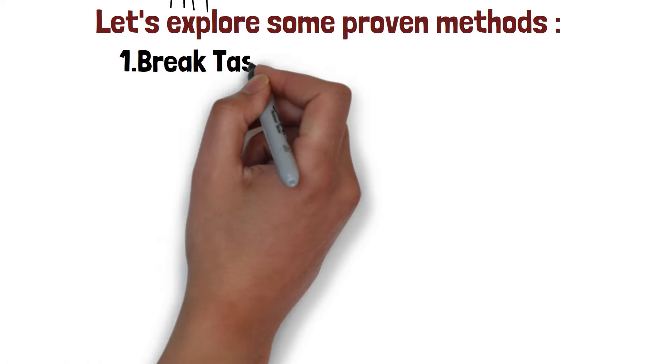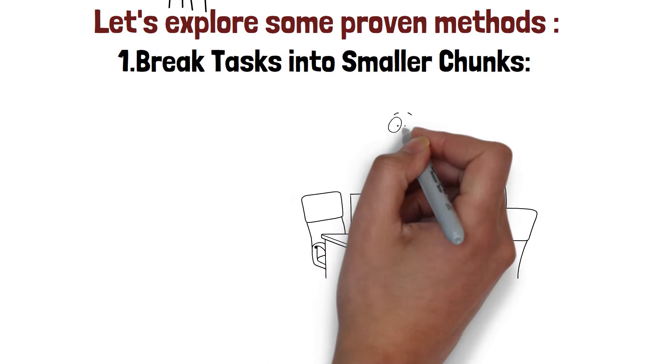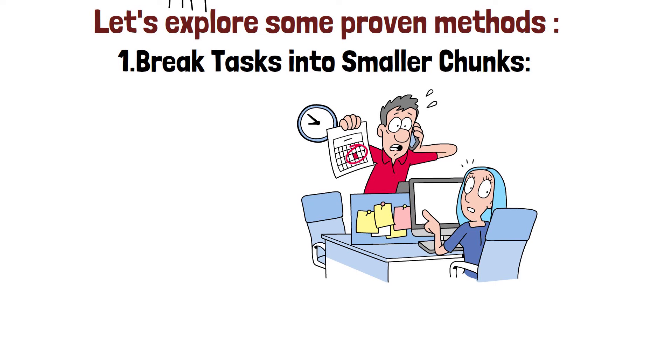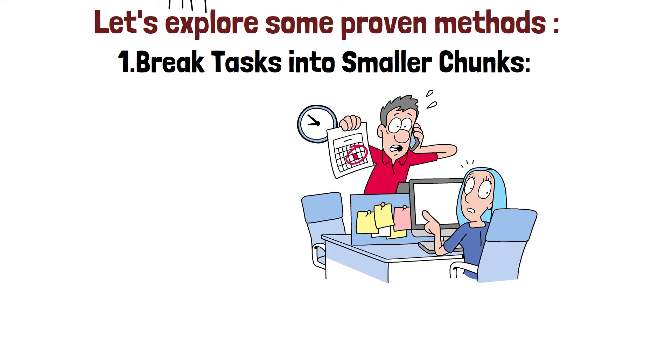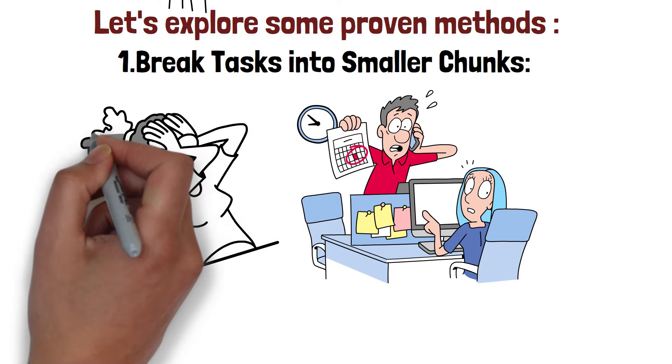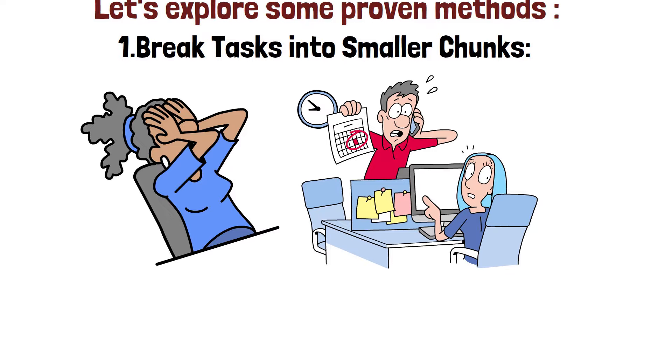Number 1. Break tasks into smaller chunks. Overwhelm is a common trigger for procrastination. Break large tasks into smaller, more manageable chunks to make them feel less daunting. Number 2. Time blocking. Allocate specific blocks of time for focused work on particular tasks. Use tools like calendars or apps to schedule dedicated work sessions, minimizing distractions.